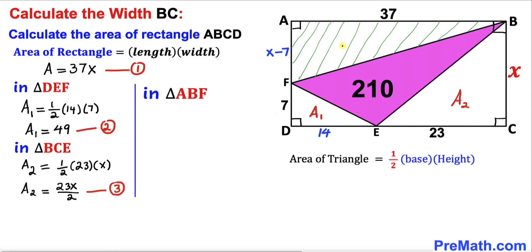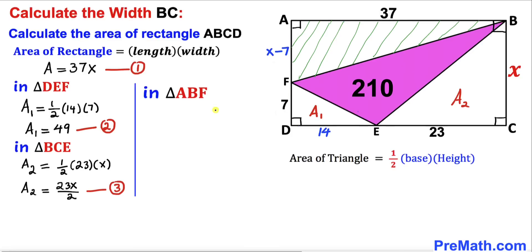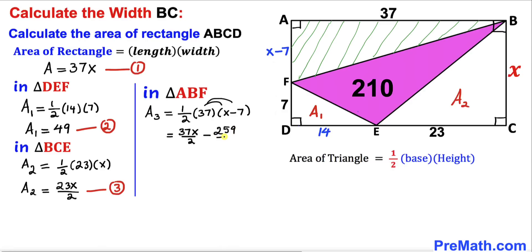Now let's calculate the area of triangle ABF. The base is 37 and the height is x minus 7. So A₃ equals one-half times 37 times (x minus 7). Distributing, this gives us 37x divided by 2 minus 259 divided by 2. We'll call this Equation 4.